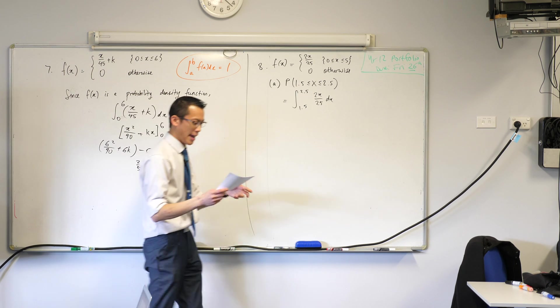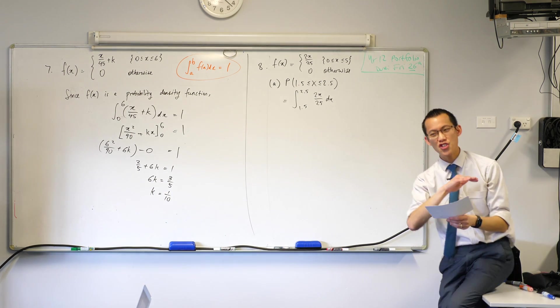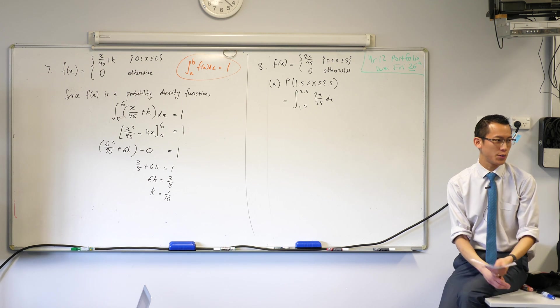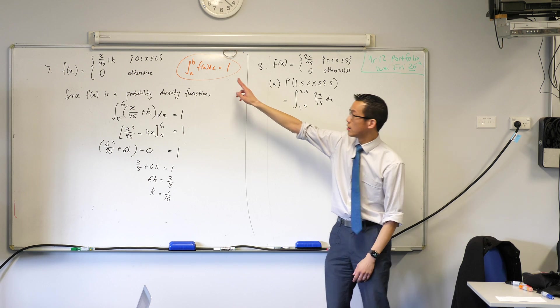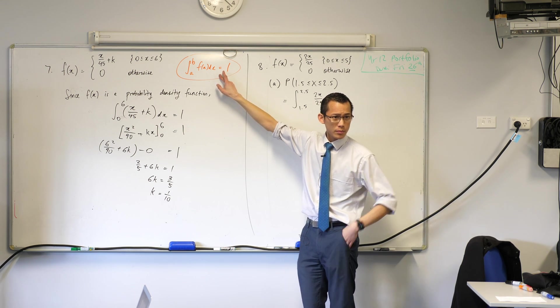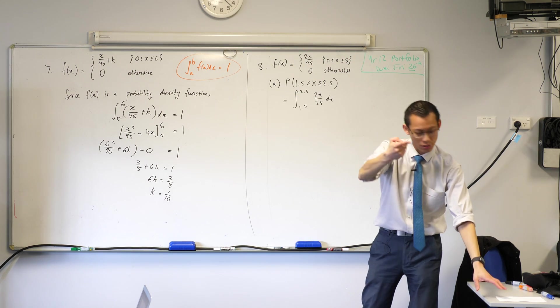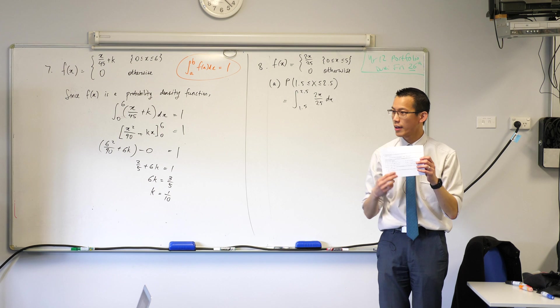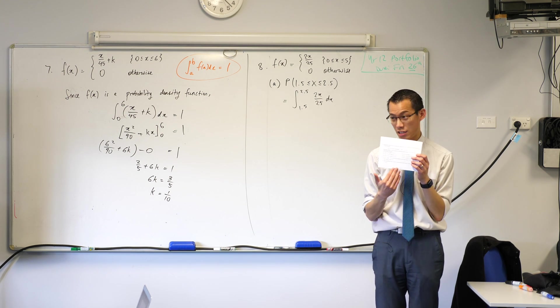But then they say, part B, show, nevertheless, that f of x is not a valid probability density function. And they even give you a hint. Now let's think about this. We've already satisfied, if part A is right, we've satisfied one condition. What's the other one again? It can't be less than zero. It's always going to be zero or above. So that tells you, even though you don't know what this graph looks like, it tells you what you're expecting to find. There's probably going to be some negatives in there, and I need to show that.